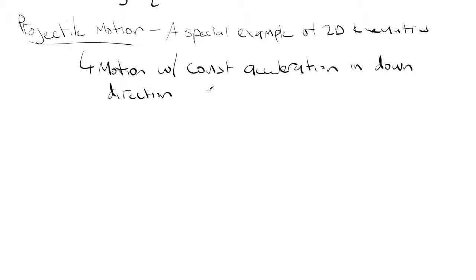Projectile motion is just like free fall, which we talked about in 1D, except now we throw in the added complexity of having something happening in the horizontal as well. Projectile motion applies to shooting basketballs through a hoop, baseball home runs, cannonballs, skydivers — all sorts of things.